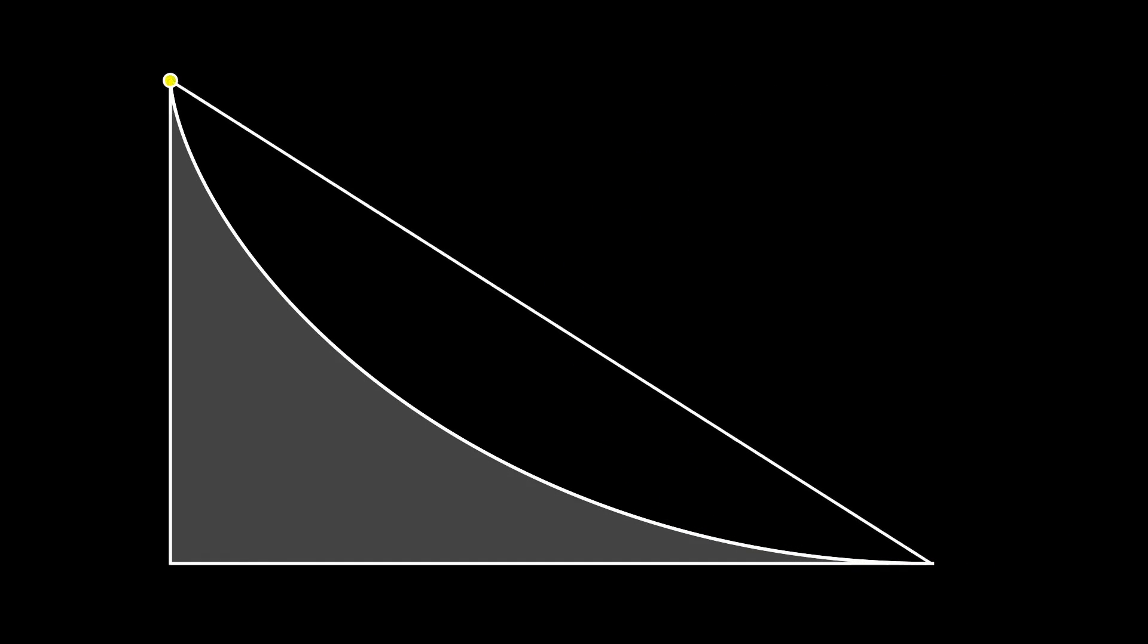This curve has the remarkable property of being the curve of fastest descent under a constant gravitational field, much faster than a straight line, showing that the shortest path doesn't necessarily mean shortest time.